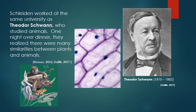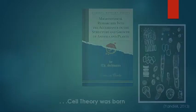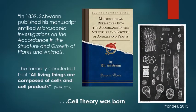And one night, over dinner, they realized there were many similarities between plants and animals. In 1839, Schwann published his manuscript, where he formally concluded that all living things are composed of cells and cell products. Thus, cell theory was born.